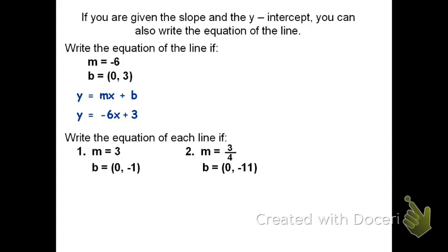Here's two examples for you to try. If you need additional time, pause the video. The first equation would be constructed using m as 3 and b as negative 1. Writing in the form y equals mx plus b, we get y equals 3x minus 1.